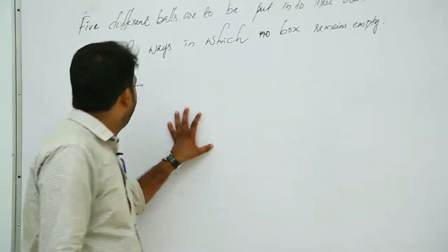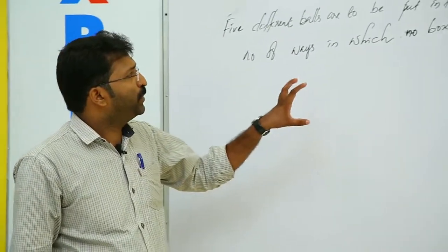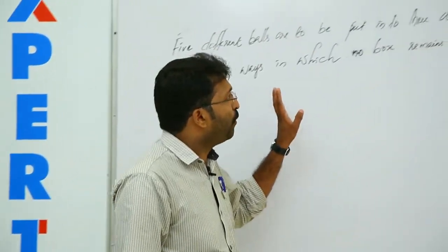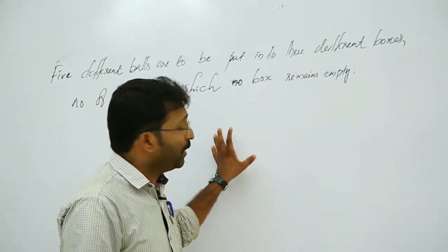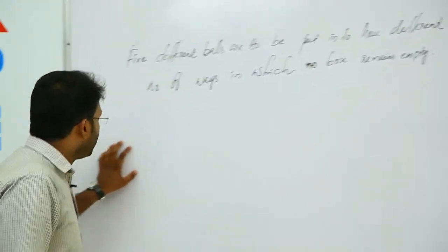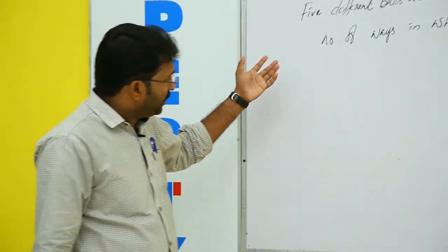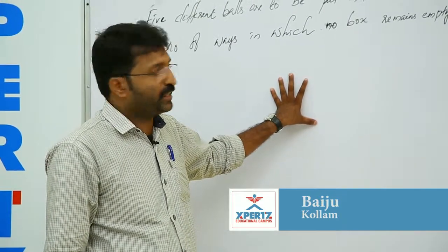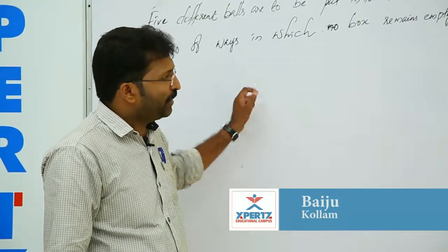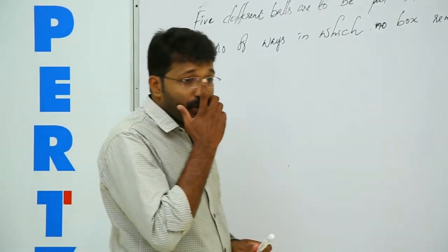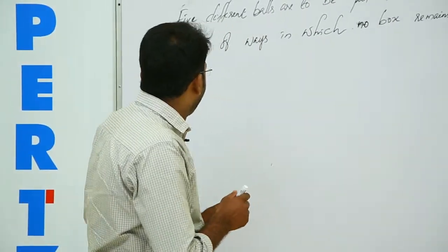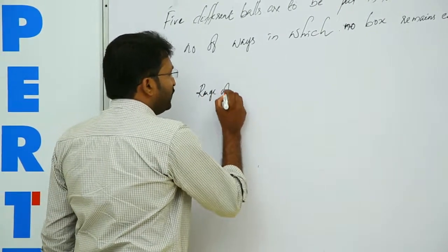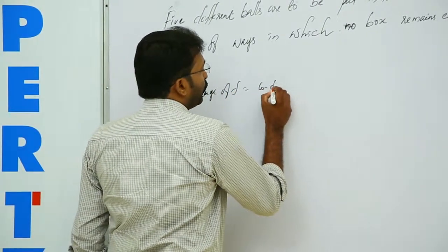Consider the question: five different balls are to be put into three different boxes — find the number of ways in which no box remains empty. This question is easily done by using the concept of onto functions. A function f is said to be onto if the range of f is equal to the codomain.